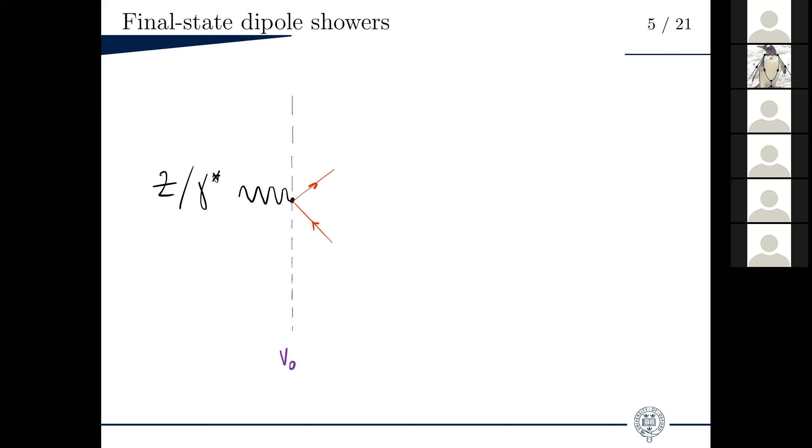There are some exceptions, but most Parton showers on the market are based on a framework that was proposed quite long ago by Gustafson and Pettersson, which is called the dipole picture. How do you determine the probability of emitting a new particle, and how do you determine the kinematics? Well, an easy way to think about this is to imagine that an event is just an ensemble of connected color dipoles. Each quark is the color end of a dipole, each antiquark is the anti-color end, and then each gluon belongs to two dipoles, and it's both the color end of one dipole and the anti-color end of another.